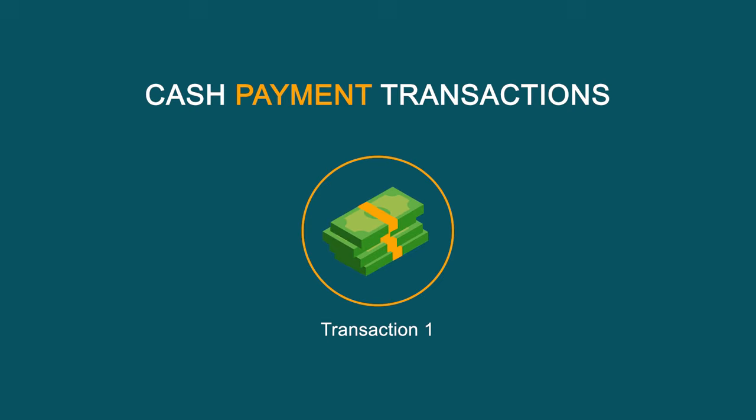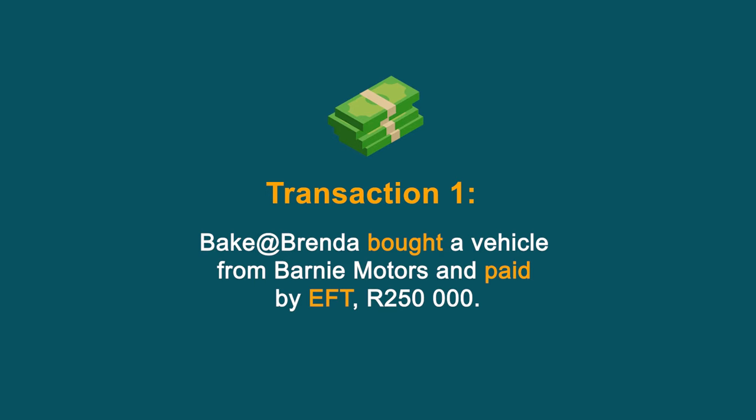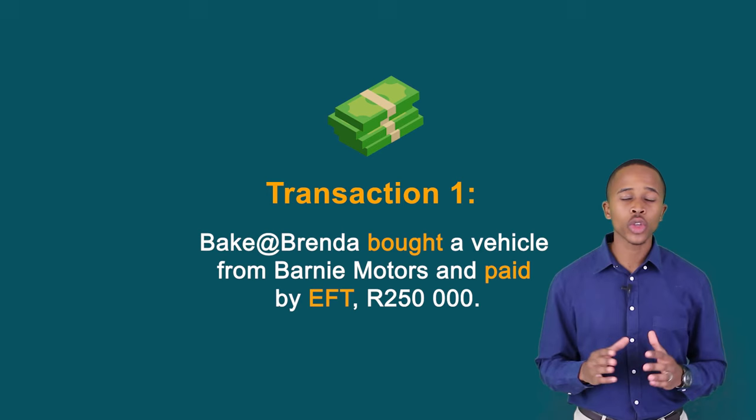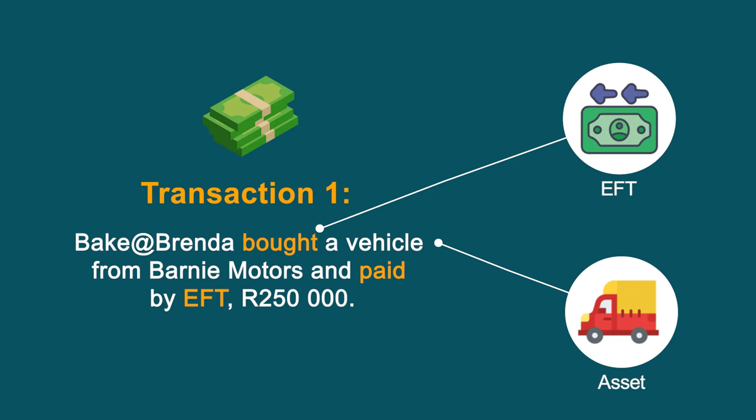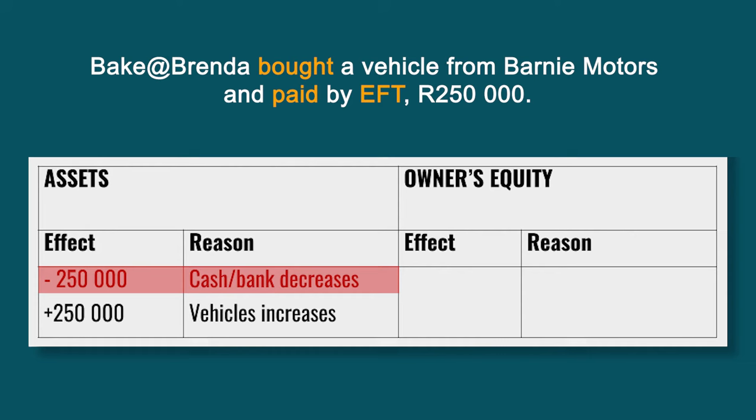Transaction one: Baker Brenda bought a vehicle from Barney Motors and paid by EFT — R250,000. Remember, before we start, stop and evaluate, then move on. Brenda bought a vehicle, which means a payment was made and money is deducted from the current bank account of the business. A vehicle was bought — vehicles are an asset, so this asset increases.